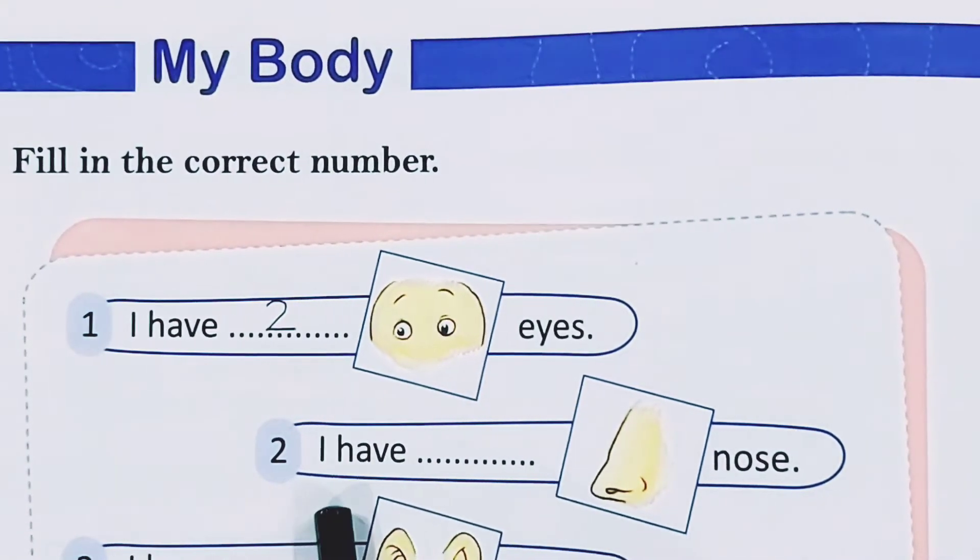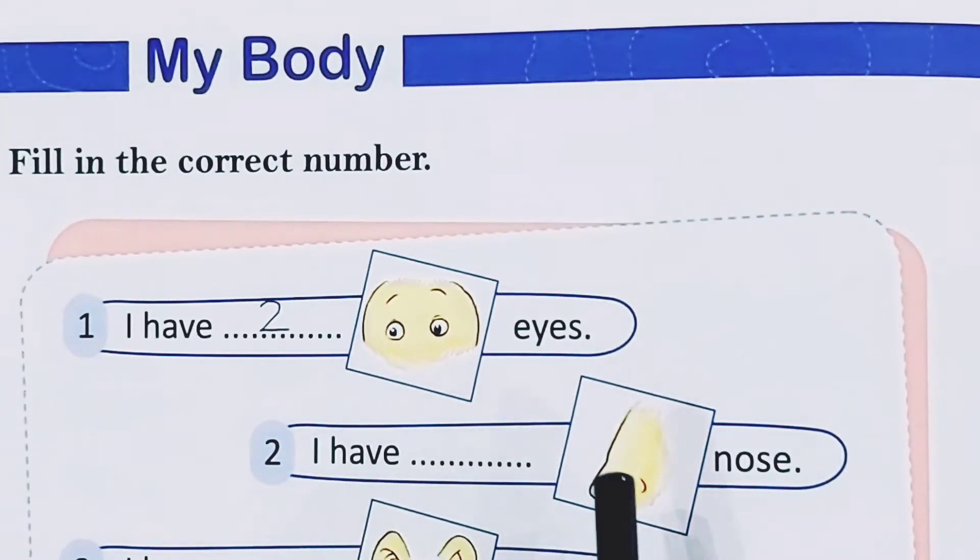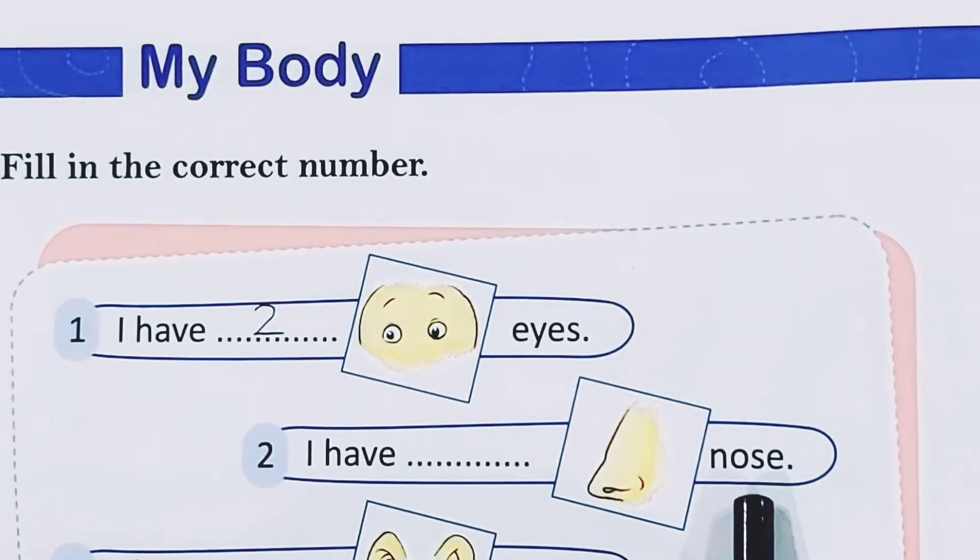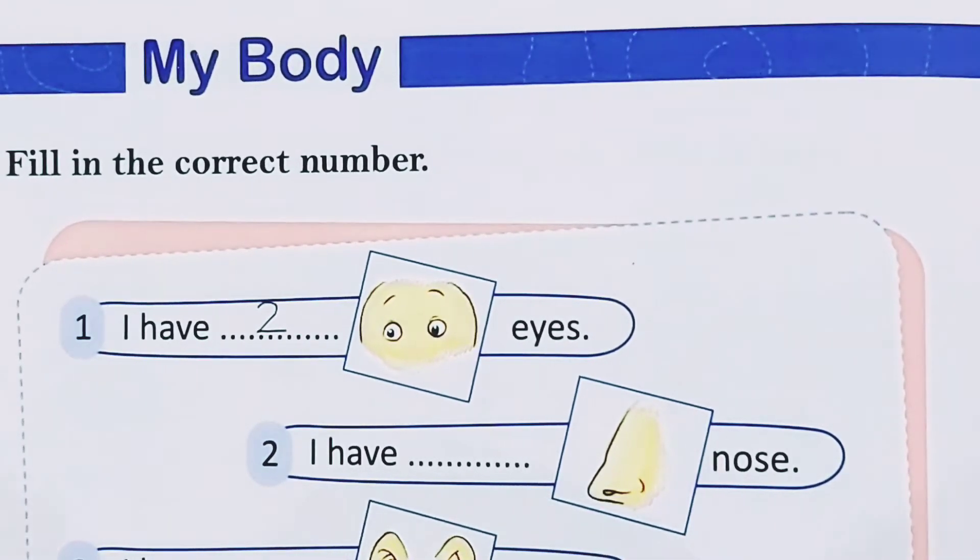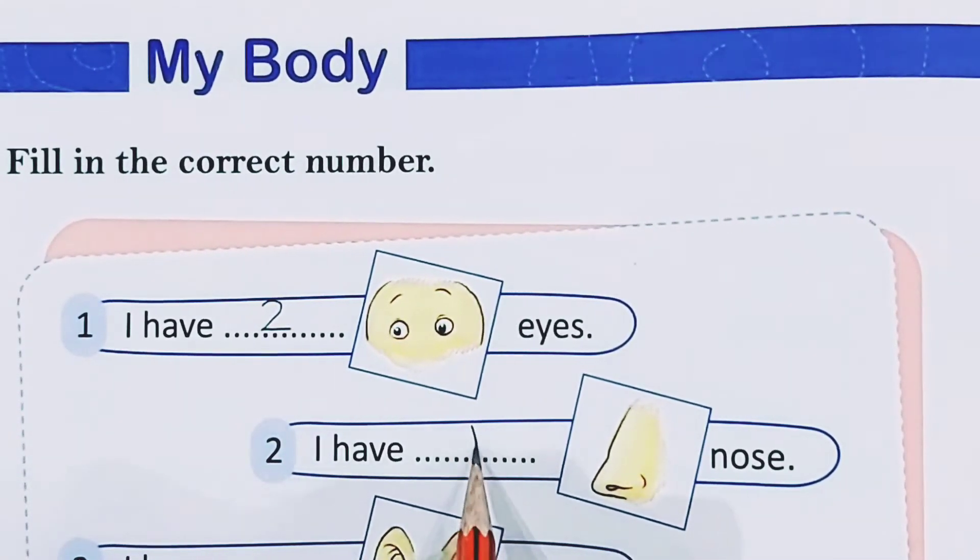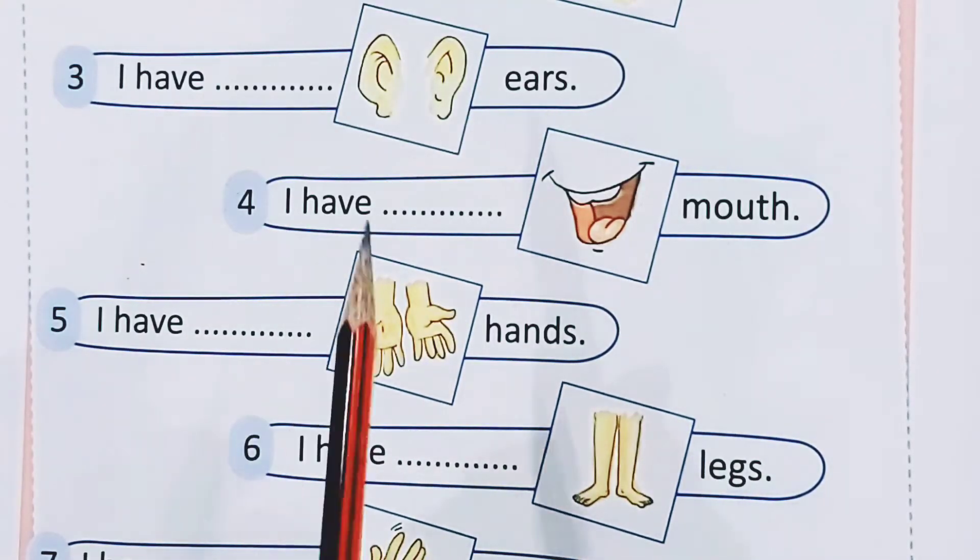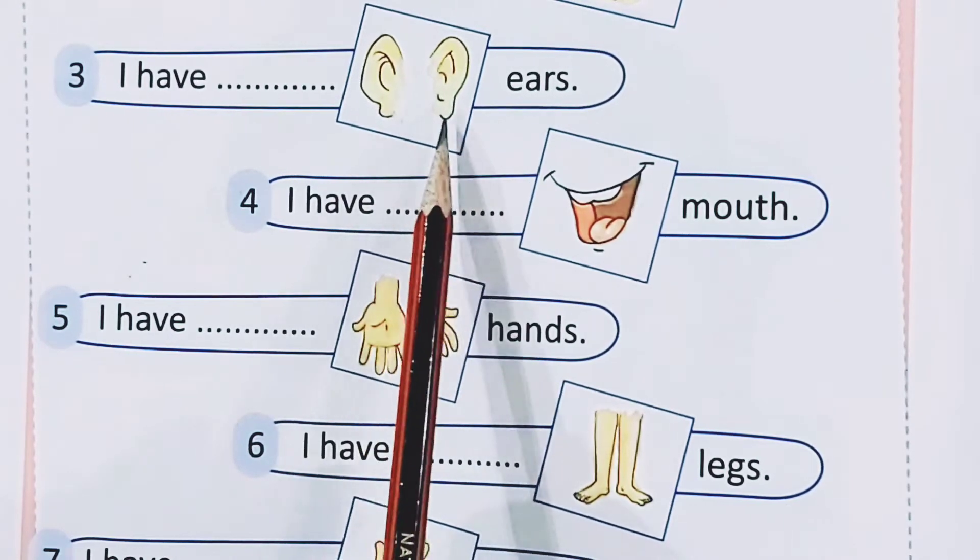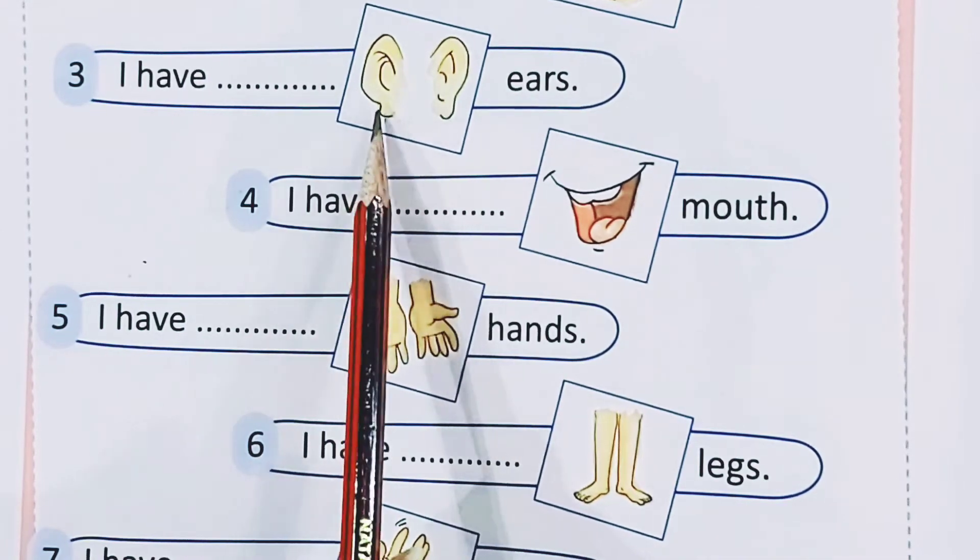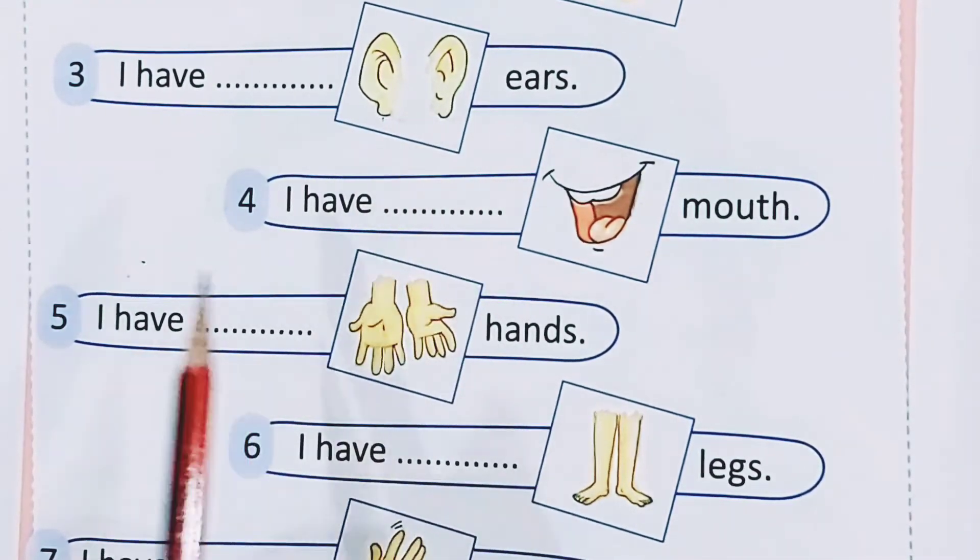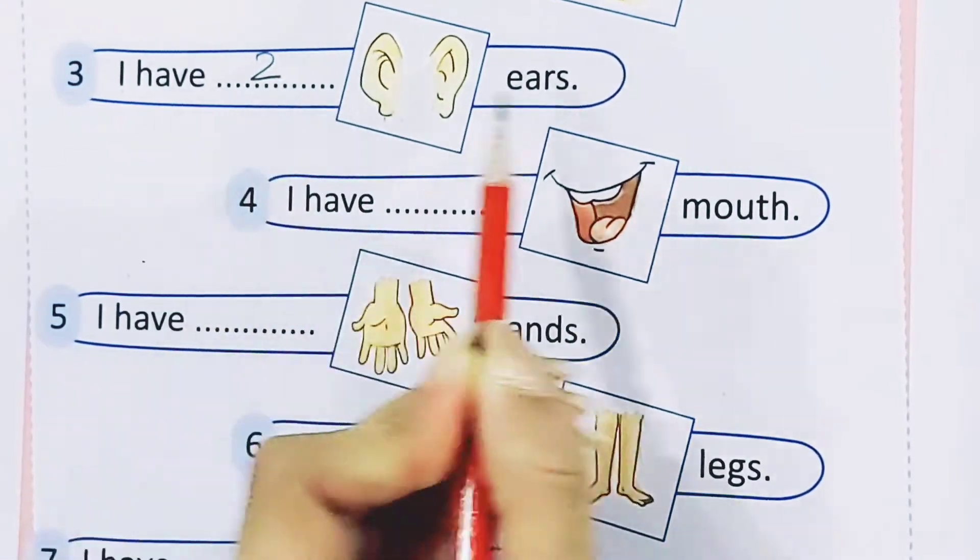Now, come to the next sentence. Children, tell me, how many noses do we have? One nose. We will write number 1. Children, tell me, how many ears do we have? We have two ears. One, two. So, I have two ears.